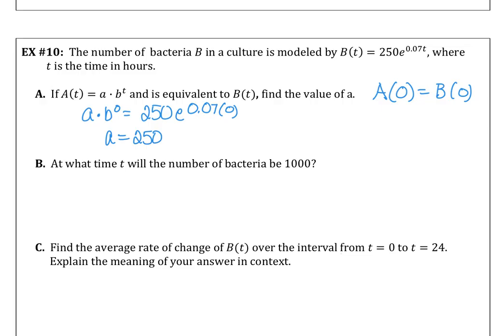At what time t will the number of bacteria be 1000? So we want to set the equation B(t) equal to 1000. 250e^(0.07t) equals 1000. Divide both sides by 250. Then e^(0.07t) equals 4. And solving for t on our calculator is 19.8042 hours.